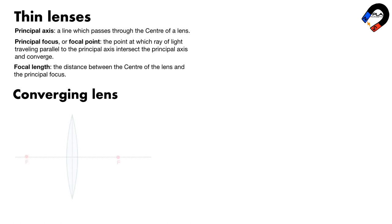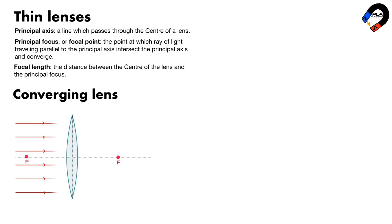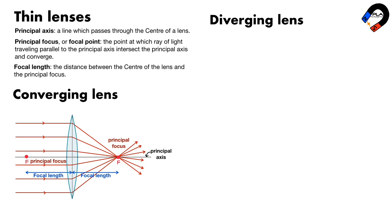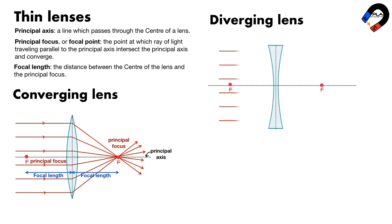In a converging lens, parallel rays of light are brought to a focus. This point is called the principal focus. The distance from the center of the lens to the principal focus is called the focal length. The line that passes through the center of a lens is the principal axis.